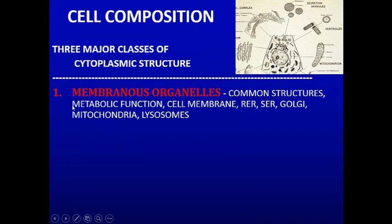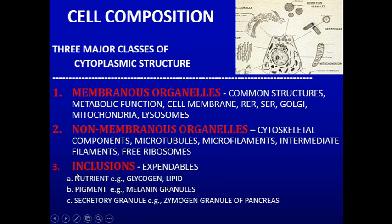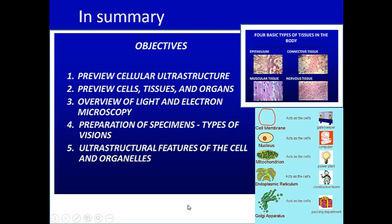Cells are composed of three major classes. First, membranous organelles essential for metabolic function: the cell membrane, rough ER which makes things, smooth ER which detoxifies, Golgi which packages things, mitochondria which provides energy, and lysosomes for remodeling. Second, non-membranous organelles including cytoskeletal components — microtubules, microfilaments, intermediate filaments — and free ribosomes. Third, inclusions — these are expendable, not required for cell life. Nutrients like glycogen or lipid, pigment like melanin granules in skin, and secretory granules like zymogen granules in the pancreas are examples.